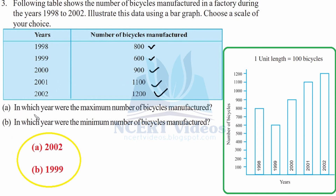In which year were the maximum number of bicycles manufactured? It is clearly visible that 2002 has the highest bar at 1200, meaning 1200 bicycles were manufactured. The minimum number of bicycles manufactured was in 1999, which has the lowest height at 600. This was your question three.